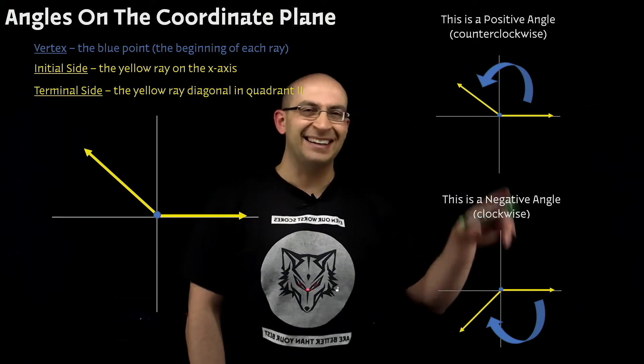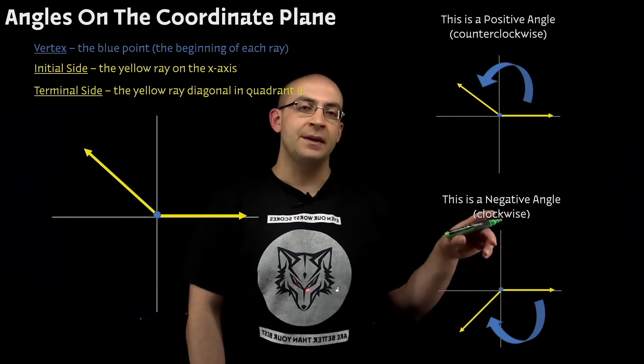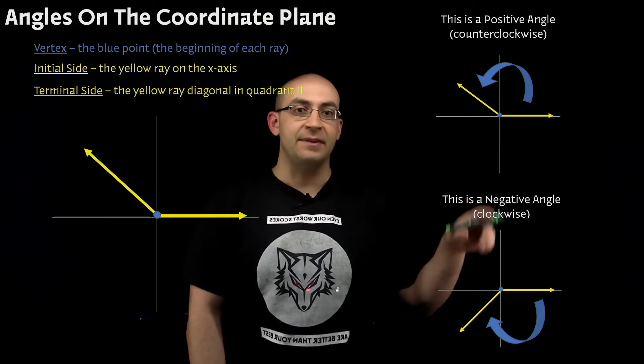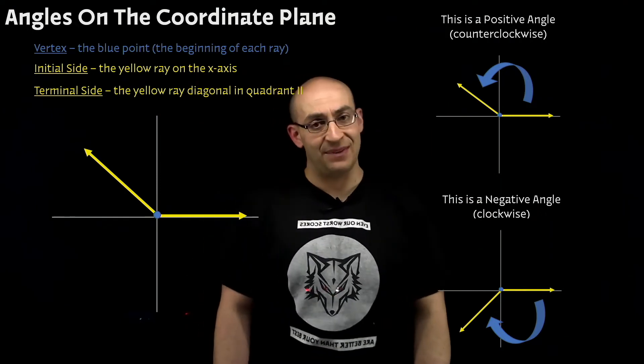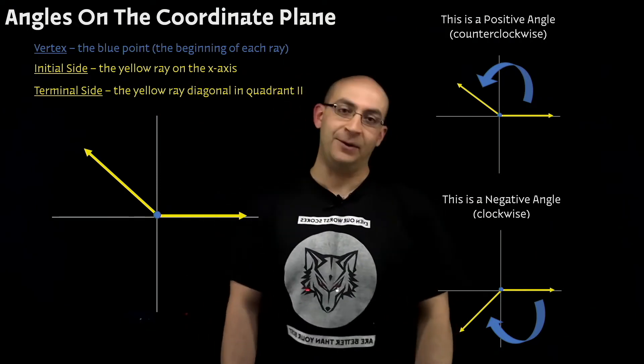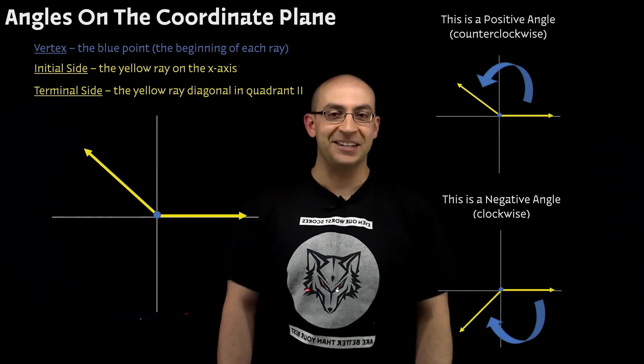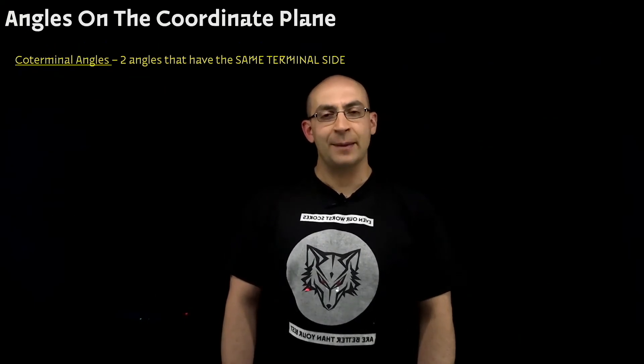So this measurement, they kind of look like the same angle measurements. One is going to be a positive value, and the other one is going to be a negative value. And yes, we have negative angle values. Welcome to pre-calculus. Continuing on with the vocabulary.